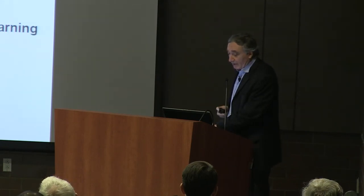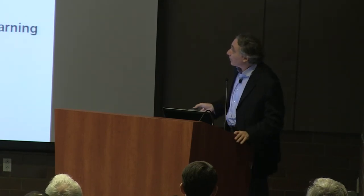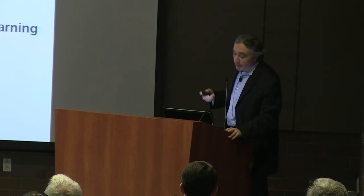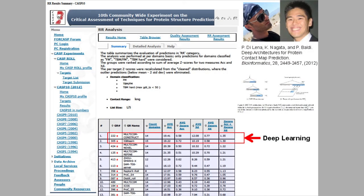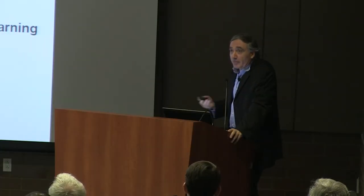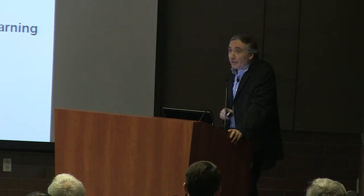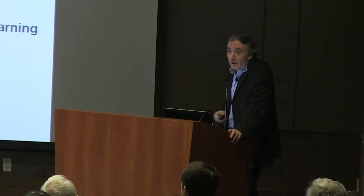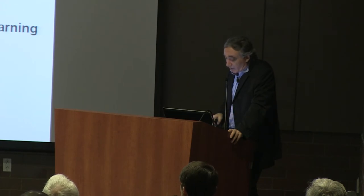We applied deep learning methods to contact map prediction. The PDB database contains about 100,000 structures — not that large compared to other problems, but growing. At the last CASP experiment — CASP 10, which takes place every two years and compares different predictors — in the contact map category, the first two entries were deep learning results from previous and current students of mine.